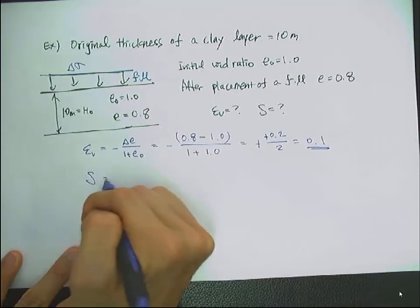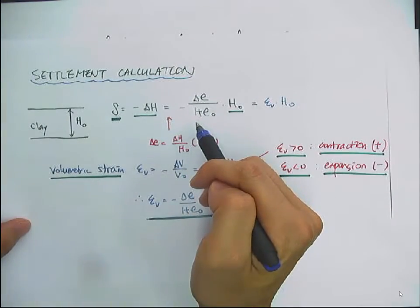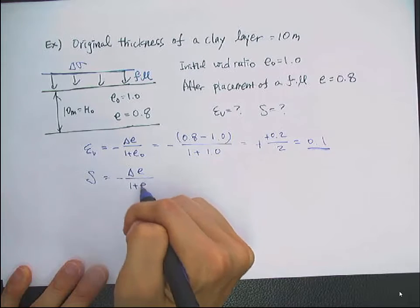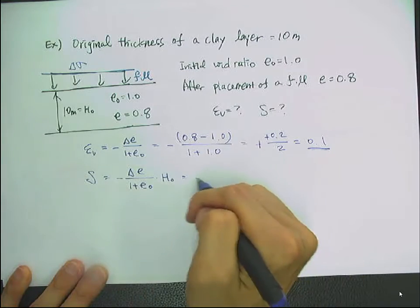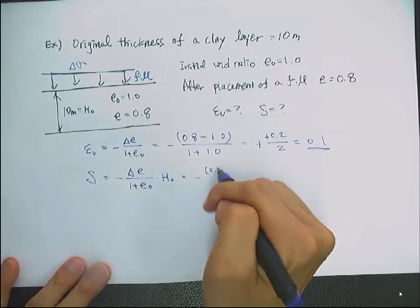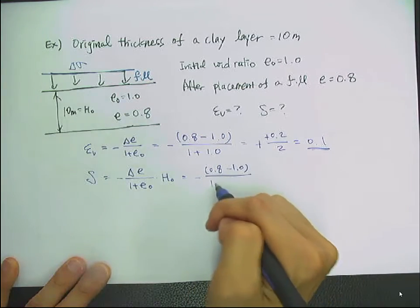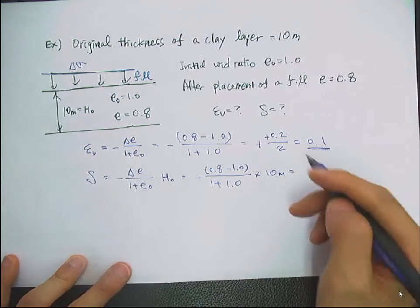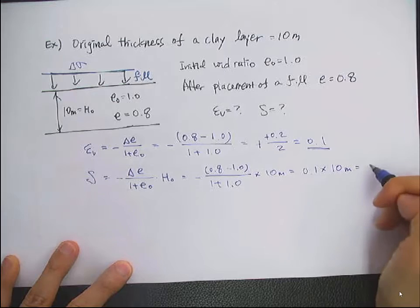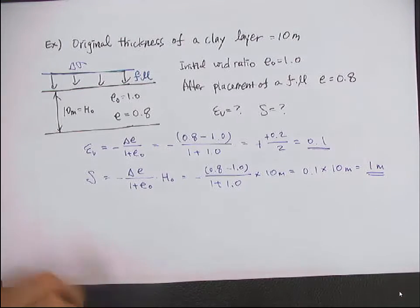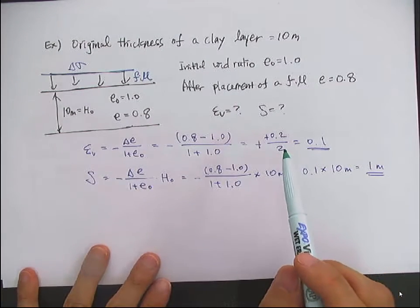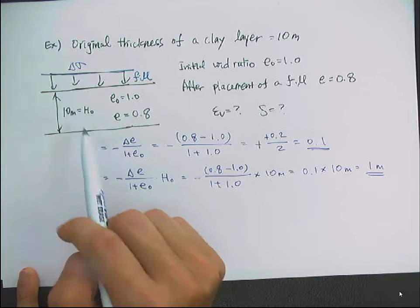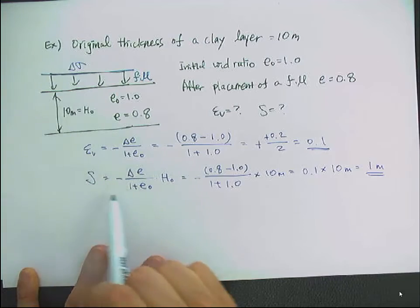The volumetric strain is 0.1. We can also calculate the settlement using the equation: minus delta e over (1 + e-naught) times H-naught. So this is (0.8 − 1.0) over (1 + 1.0) times 10 meters, which equals 0.1 times 10 meters = 1 meter. This example tells you that if the void ratio changes from 1.0 to 0.8 for the whole clay layer, and the clay layer is 10 meters thick, the settlement will be 1 meter.